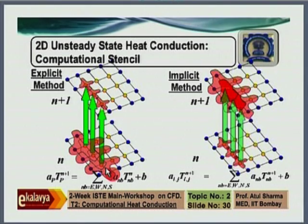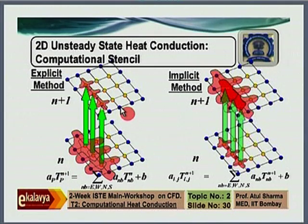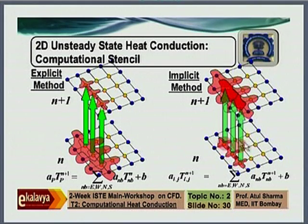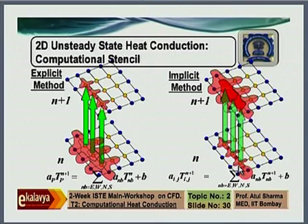This is a pictorial representation — an animation of the way this algebraic equation scrolls through all 9 points. When you go to the implicit method, you get an algebraic equation where temperature at a particular point at the next time level is a function of its 4 neighbours, and the constant B consists of the temperature from the previous time level. So the stencil almost reverses: in the new time level you have 5 neighbouring values — 4 neighbours plus the node value — and 1 value from the previous time step. This is what we call the computational stencil: a pictorial representation of the representative algebraic equations.